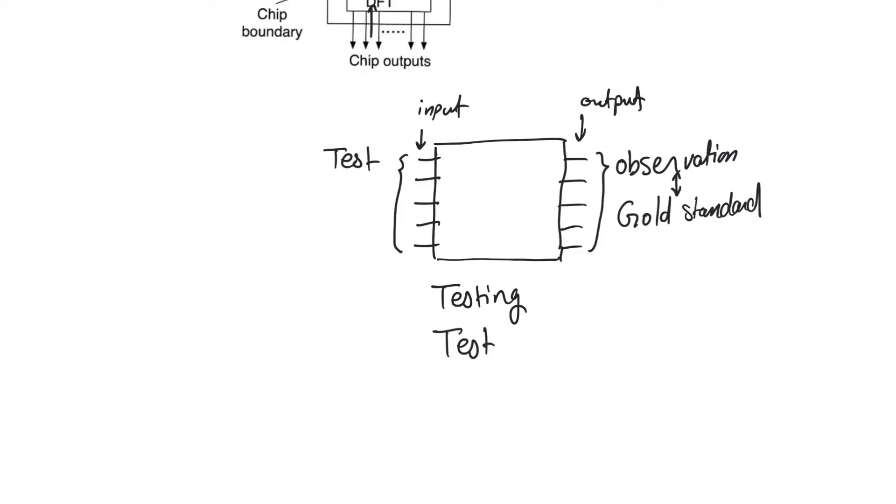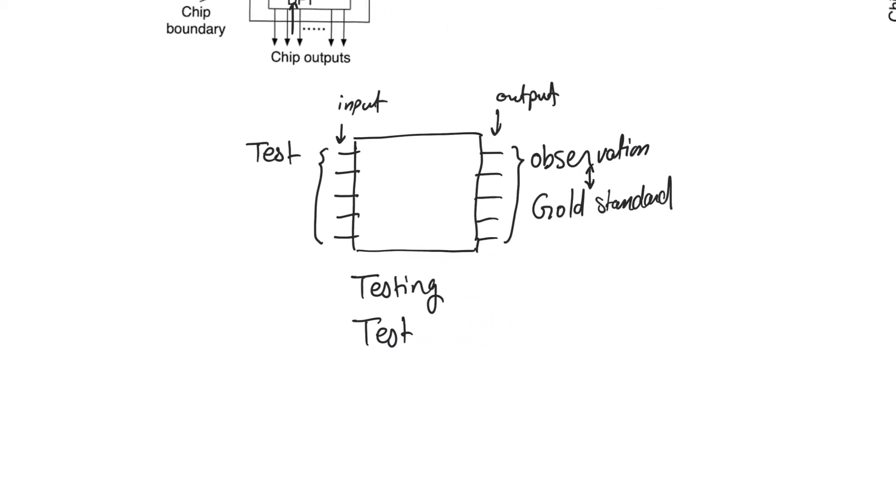Now the observation could be correct or incorrect, so you need to compare it to something. When you compare it to something, you compare it to a gold standard. The gold standard is the correct output that you expect to see if the chip is functioning properly. If you compare the observation to the gold standard and you find that they match, then the chip is functioning properly. But of course, you don't apply a single test. You apply multiple tests. You have to apply multiple tests to make sure that the chip is functional for all of your inputs. But if you find a mismatch between the gold standard and the observation, then the chip isn't working properly.